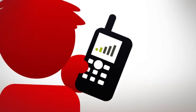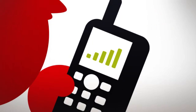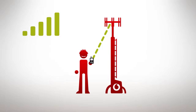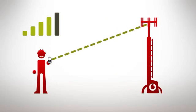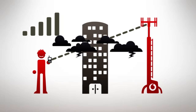The bars on your phone show how strong the radio link is between you and your base station. The link gets weaker if you move further away, if there are obstacles in the way, or if the weather is playing up.